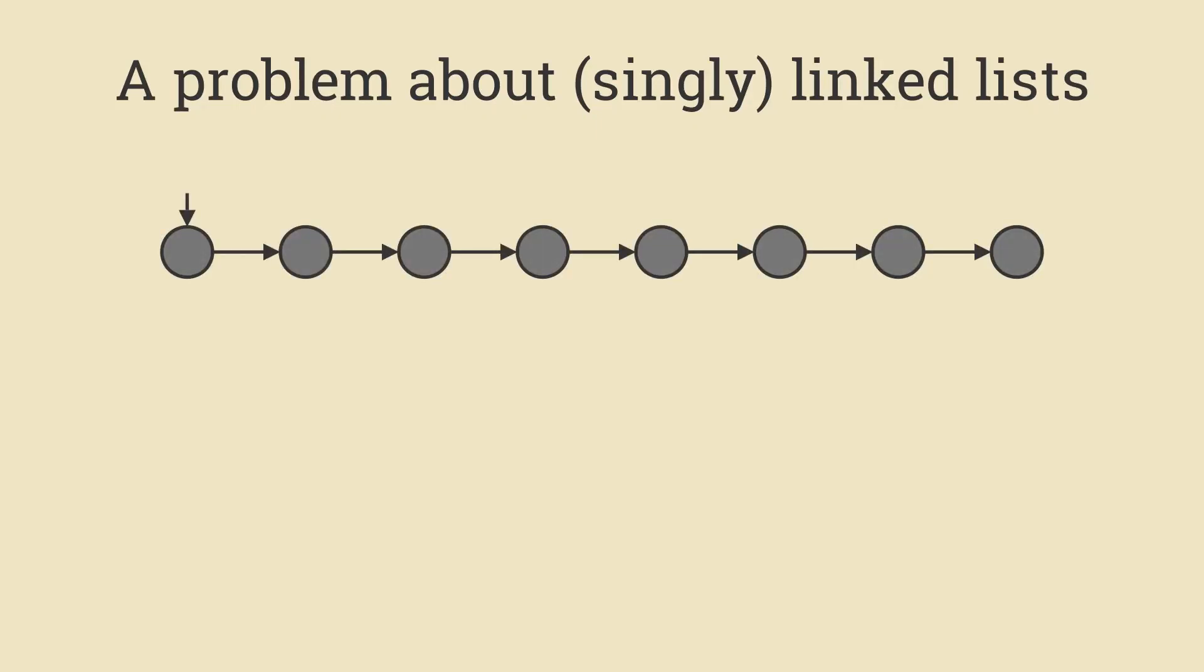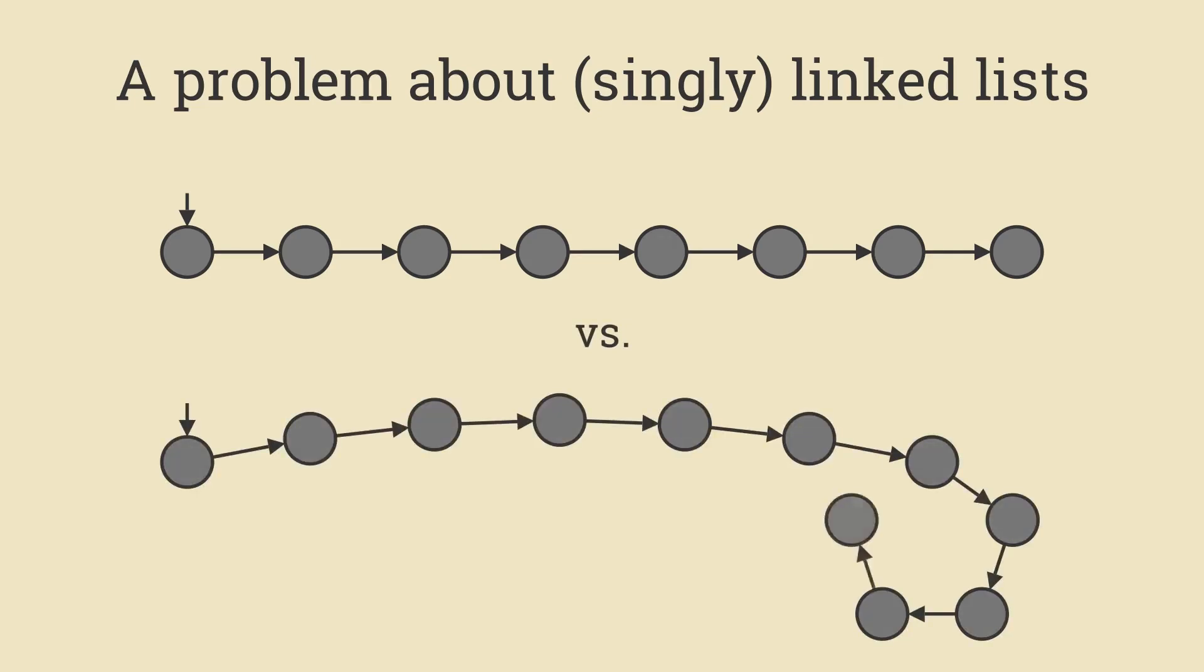Linked lists are a common topic for coding interviews and exercises. If you haven't seen them before, you can think of them as graphs where vertices have at most one outgoing edge and one node is labeled as the beginning. One well-known problem goes like the following: differentiate between ones that terminate and ones that loop back on itself.